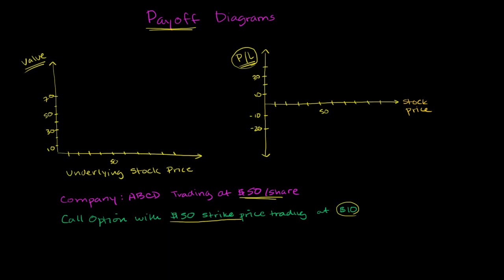Which tells us that the owner of that option has the right, but not the obligation, to buy company ABCD stock at $50 per share up to expiration, assuming it's an American option. If it was a European option, it would be on expiration.